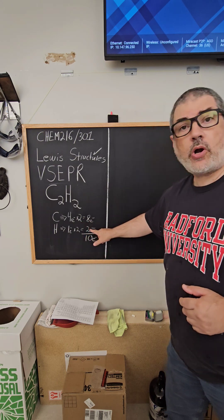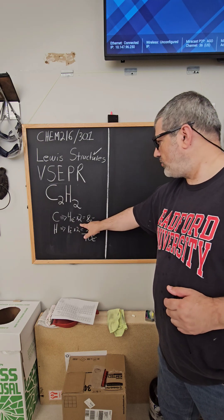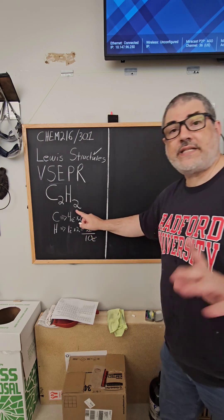So the first thing is we count up our electrons. We have two carbons donate four electrons, so two times four is eight and then two hydrogens, so that gives us two electrons. So a total of 10.